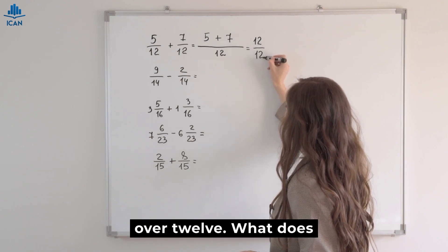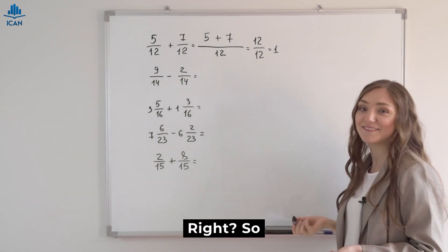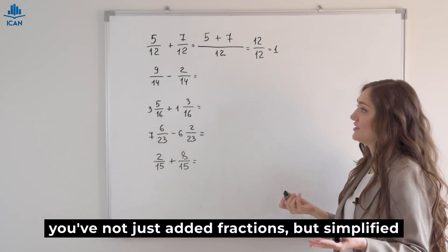12 over 12. What does that equal? 1, right? So you've not just added fractions, but simplified too.